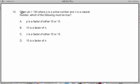So first I'm going to read the problem. Number 13, given p times n equals 150, where p is a prime number and n is a natural number, which of the following must be true? And then it gives us a whole series of answers about p being a factor of either 10 or 15, 10 is a factor of n, n is a factor of either 10 or 15, 15 is a factor of n. Now, if you're like most people, you just read that problem and you're like, what the? So let's clarify some things. It's really important because there's a lot of stuff here.